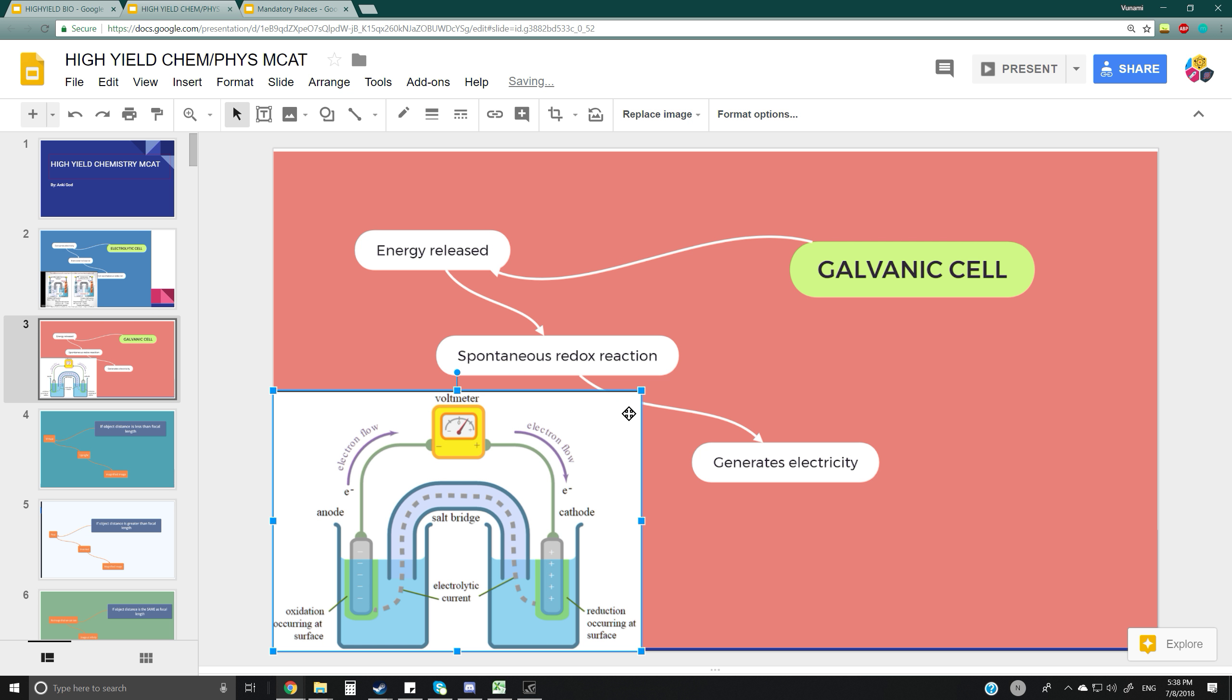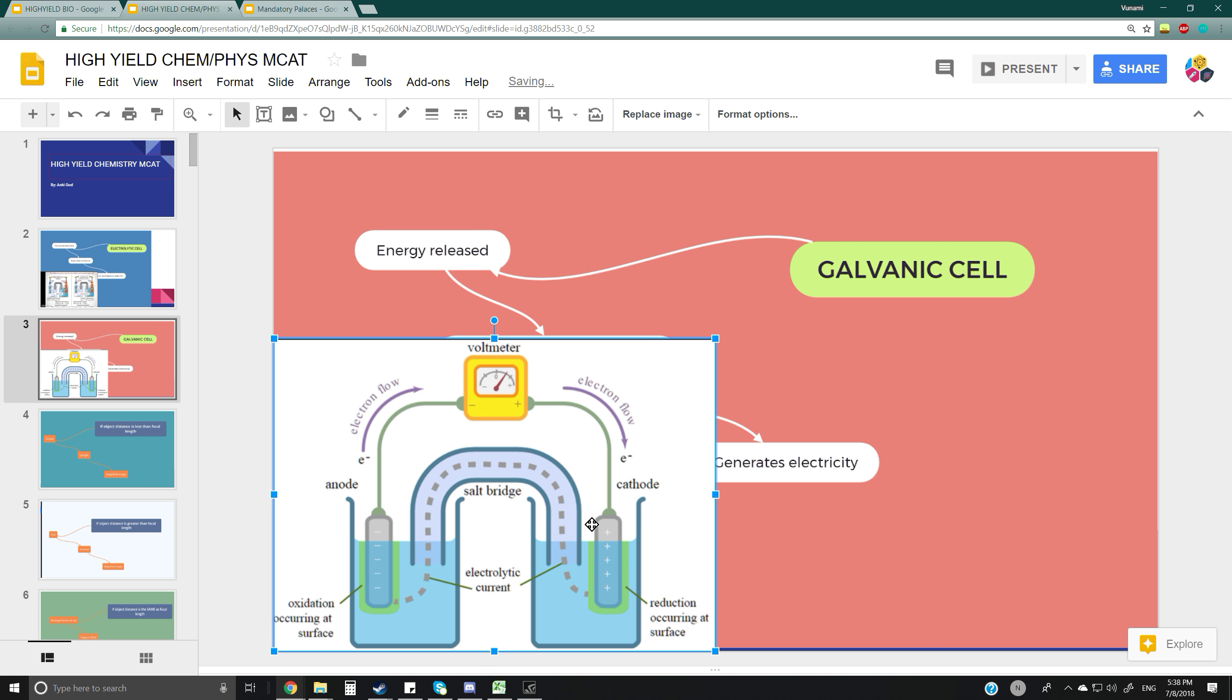But in galvanic cells, it's what we expect: the cathode is positively charged while the anode is negatively charged.